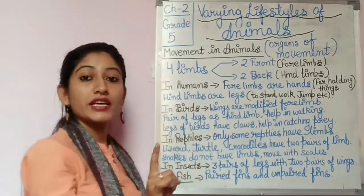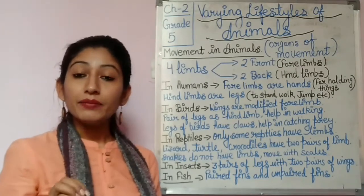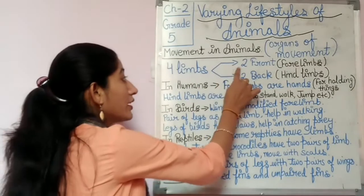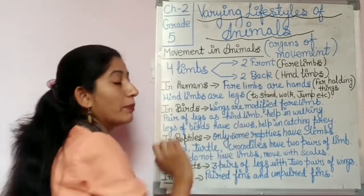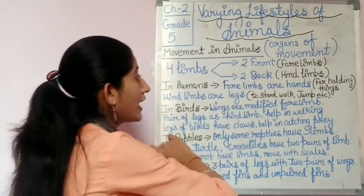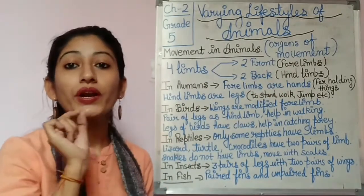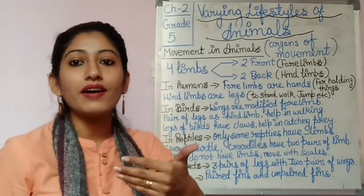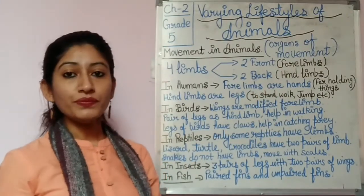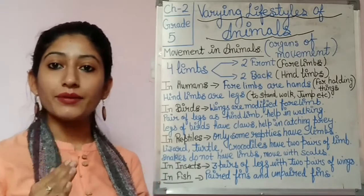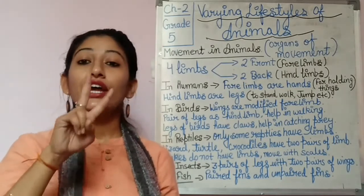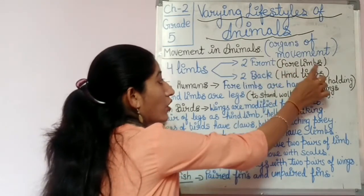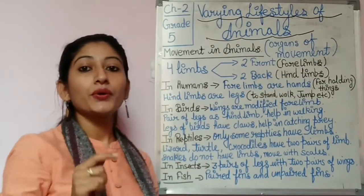The two front limbs are called forelimbs — spelled F-O-R-E — and the two back limbs are called hindlimbs. So, in animals there are four limbs which can be divided into two types: two forelimbs and two hindlimbs.